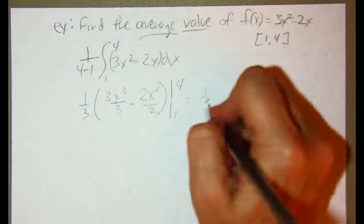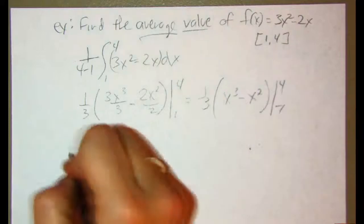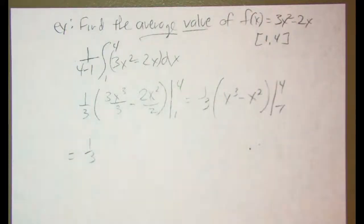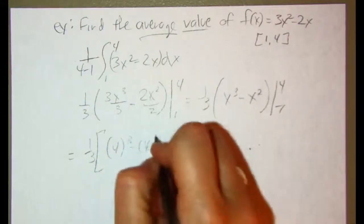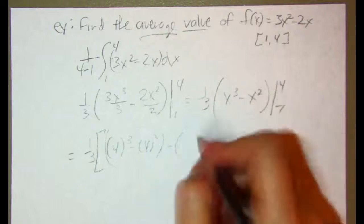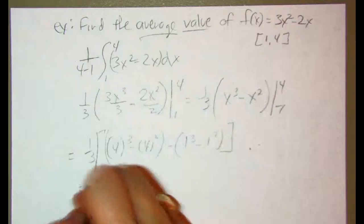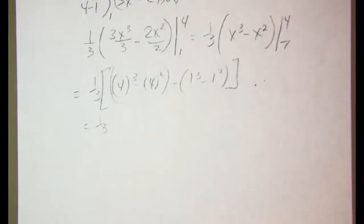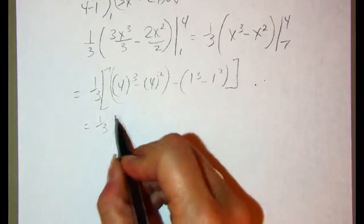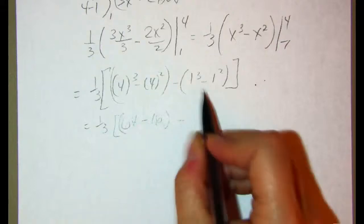So let's go ahead and clean this up before we do anything else. That would be x cubed, x squared, and 4 to 1. So I'm going to continue to leave the 1 third out there. So that's 4 cubed minus 4 squared minus 1 cubed minus 1 squared. So let's see, that would be 64 minus 16, and 1 minus 1 is 0.